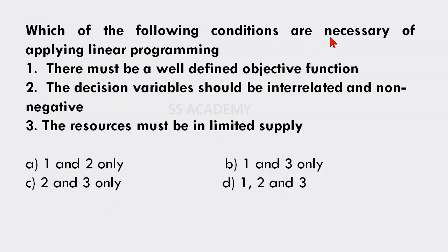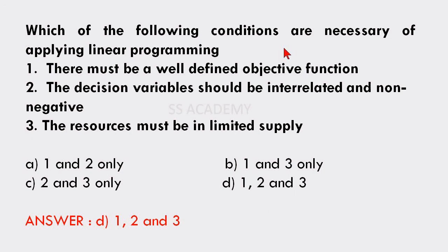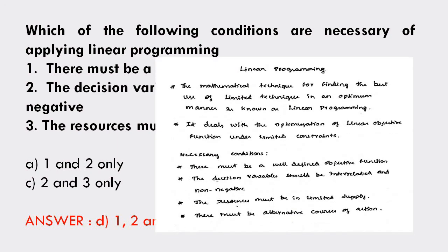Next question: Which conditions are necessary for applying linear programming? (1) There must be a well-defined objective function; (2) the decision variables should be interrelated and non-negative; (3) the resources must be in limited supply. The answer is option D: 1, 2, and 3 — all three given conditions are correct. There must also be alternative courses of action.